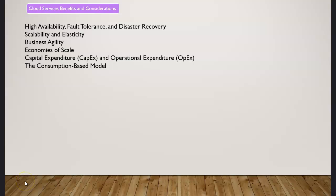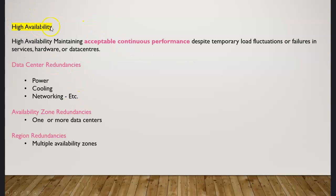In the previous lecture we talked about six different concepts, and now it's time to learn about high availability. High availability is something which is acceptable with a continuous performance — that means despite temporary workload fluctuations or something going wrong, you still have continuous performance. That's how high availability can be defined.